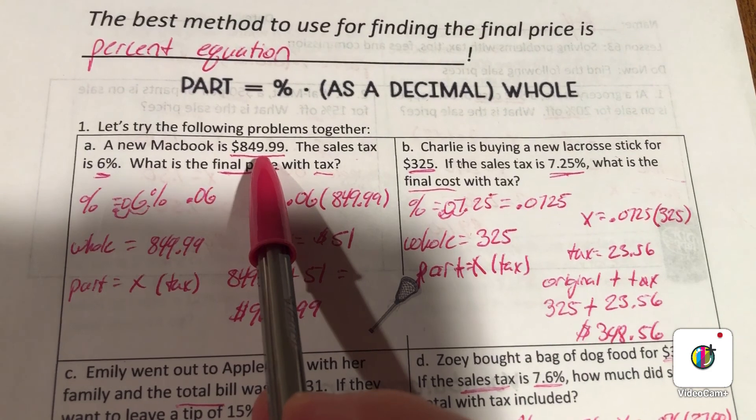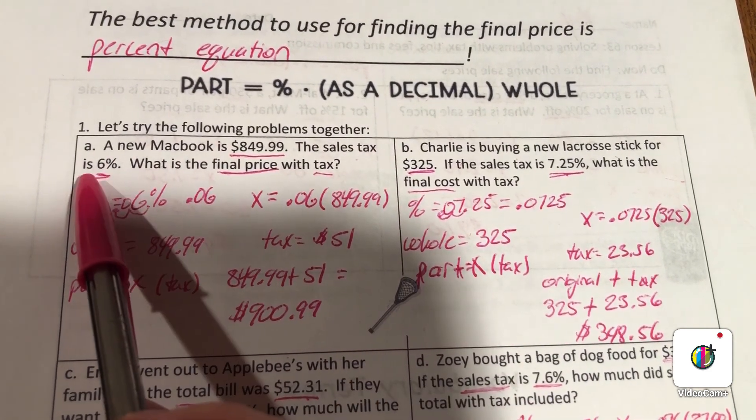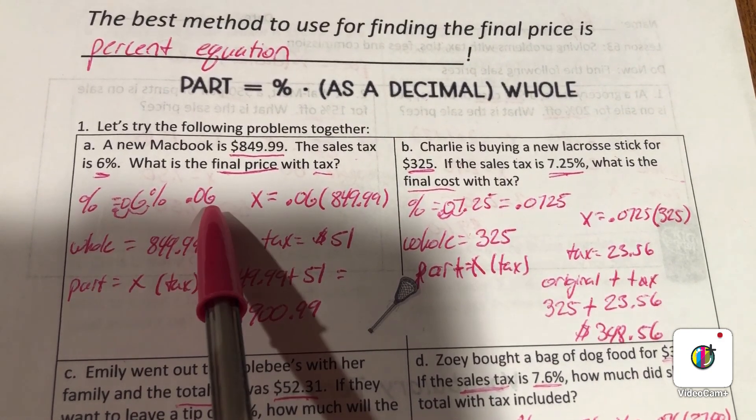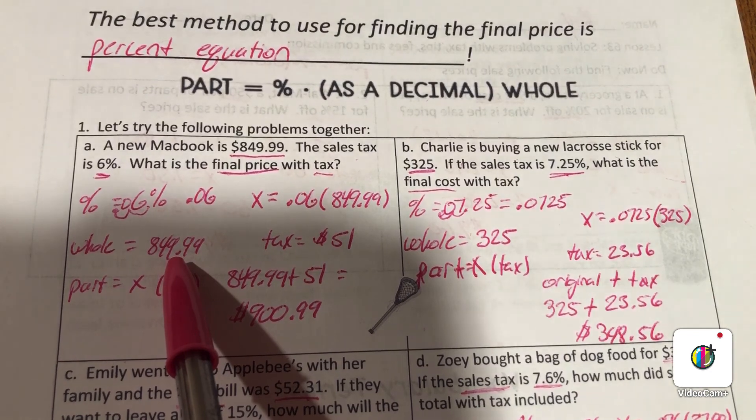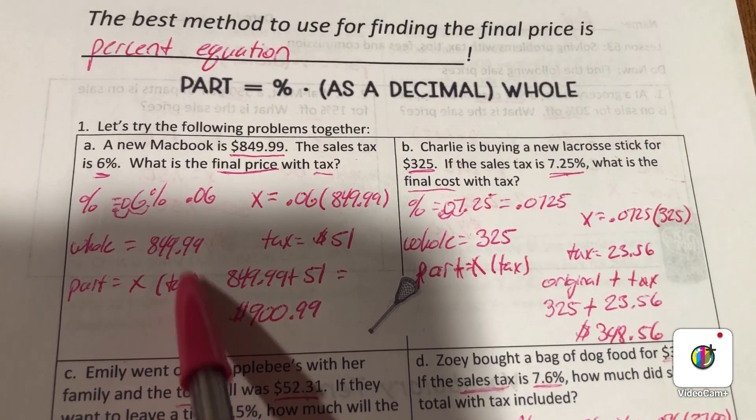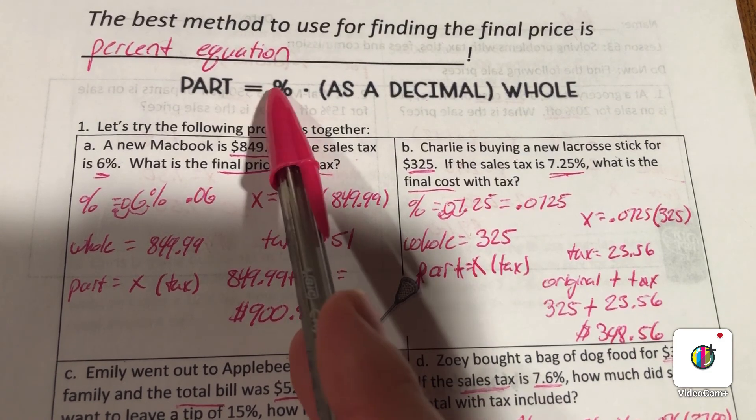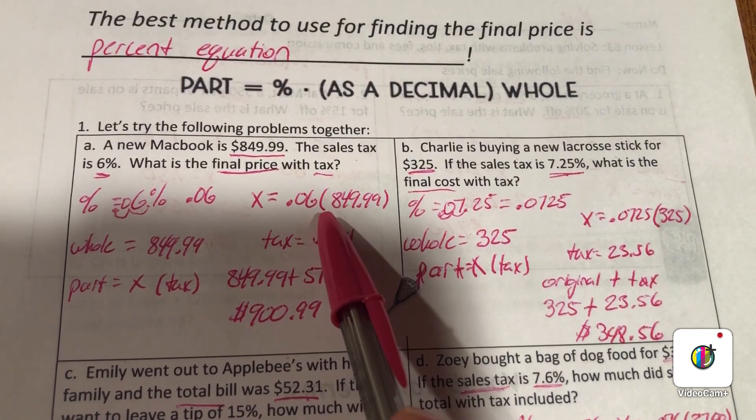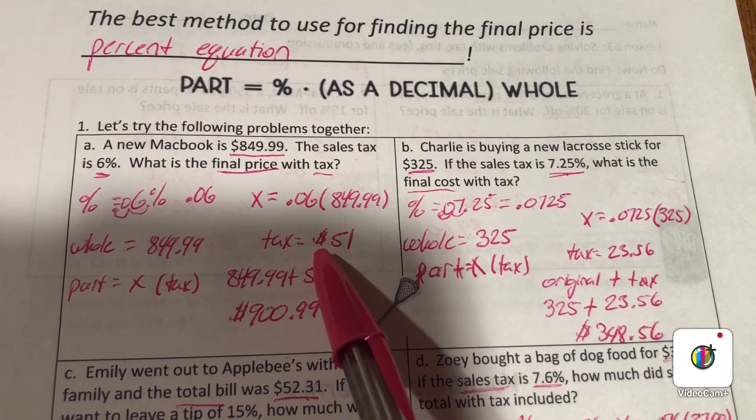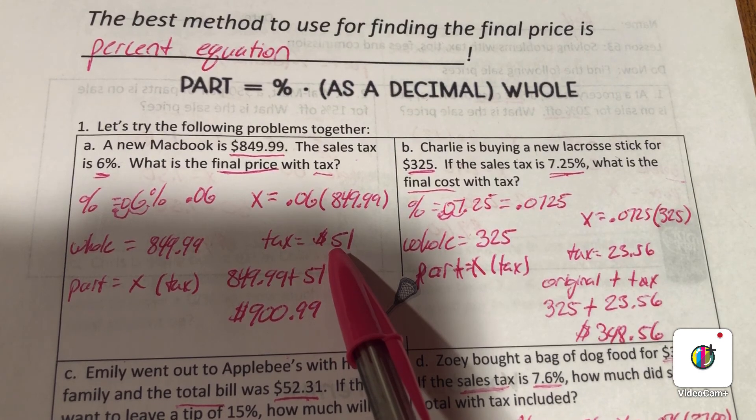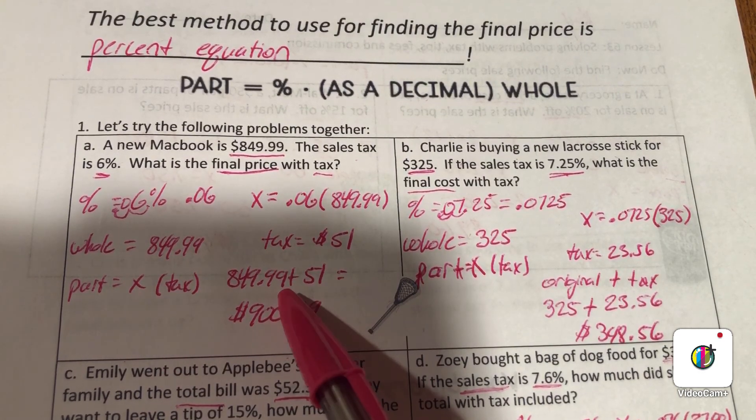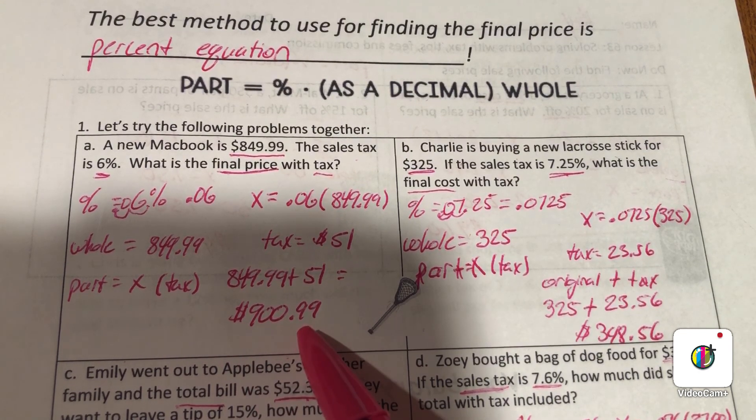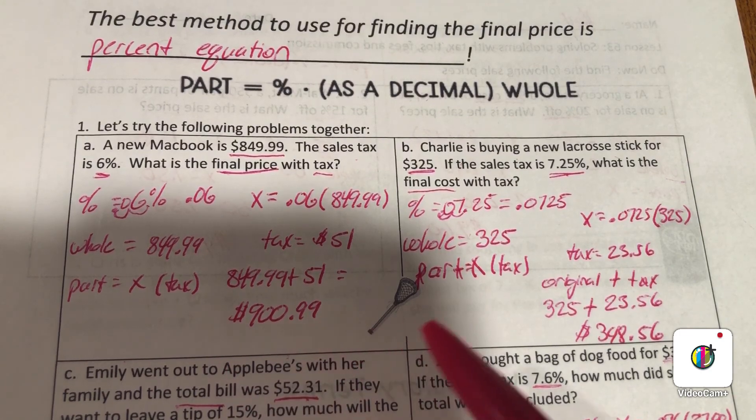A new MacBook is $849.99. Sales tax is 6 percent. What is the final price with tax? Make it a decimal: 0.06. The whole amount is $849.99, and the part is the tax we're looking for. So we multiply using this equation: 0.06 times $849.99 gives us a tax amount of $51. Then I take how much it costs plus my tax to give me $900.99. This is how much it'll cost with tax.